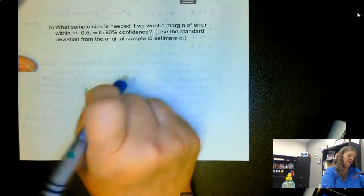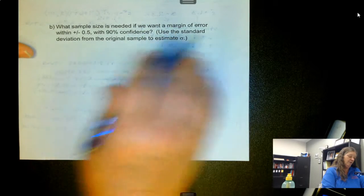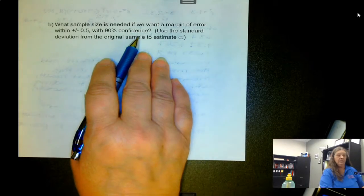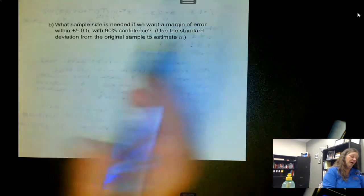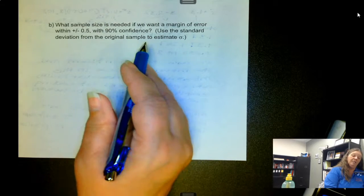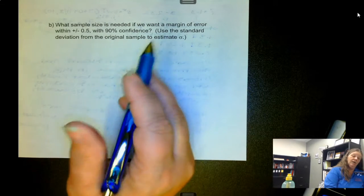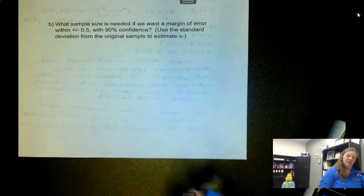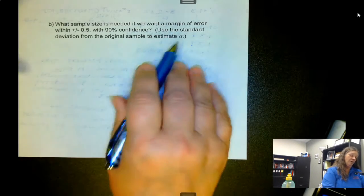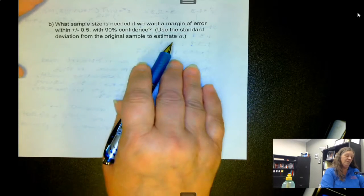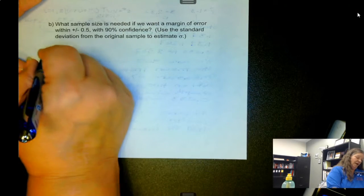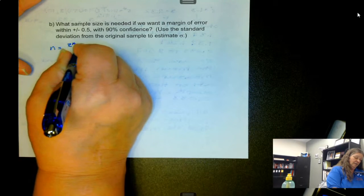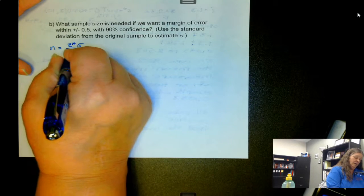Now, what sample size is needed if we want the margin of error within plus or minus 0.5 with 90% confidence? Now, typically to find the sample size, you would use population standard deviation, but the chances of having population standard deviation are very slim, so we're going to use the sample standard deviation to estimate it.